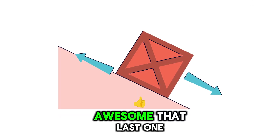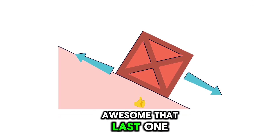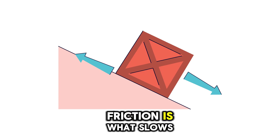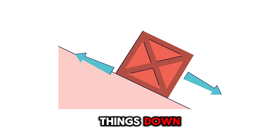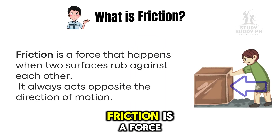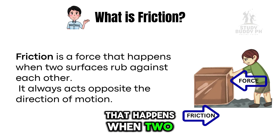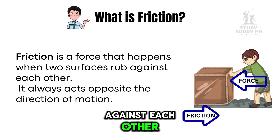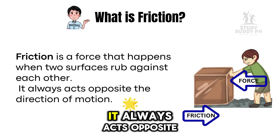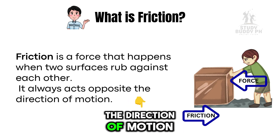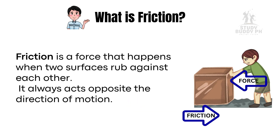Awesome! That last one gives us a clue — friction is what slows things down. Friction is a force that happens when two surfaces rub against each other. It always acts opposite the direction of motion.